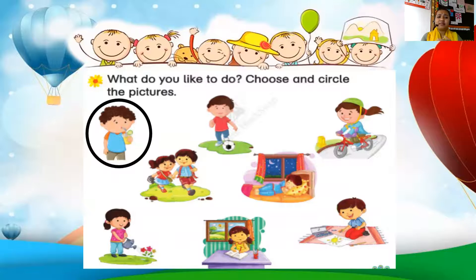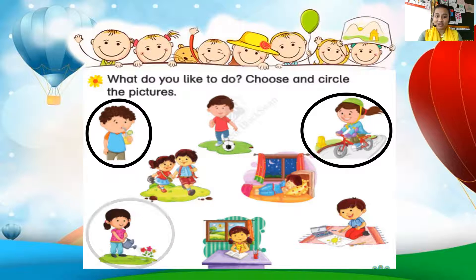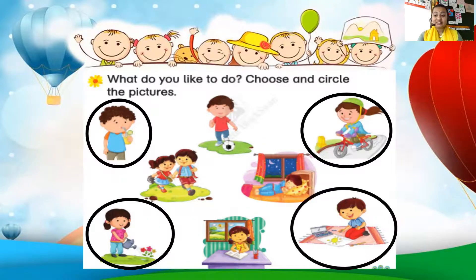For example, I like drinking juice, so I have circled that picture. I also like to ride a bicycle, so I have circled that picture. And I like watering the garden, so I have circled that picture. And I like drawing. So these are the activities which I like.